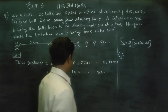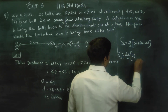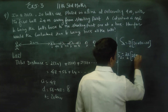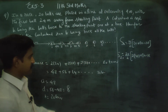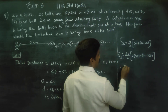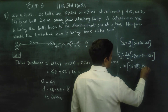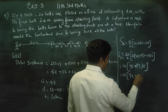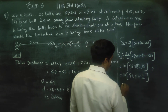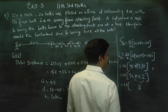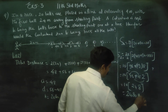S20 equals 20 by 2, times (2 into 48 plus 20 minus 1 into 8). That gives 10 times (96 plus 19 into 8). 19 into 8 is 152. So 10 times (96 plus 152) equals 10 times 248, which gives a total distance of 2480 meters.